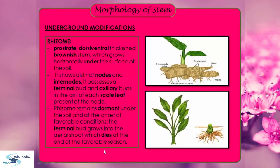There are four underground modifications. First is rhizome. Rhizome is a prostrate, dorsiventral, thickened brownish stem which grows horizontally under the surface of soil. As you can see, this is the rhizome with scaly leaves, buds, nodes and adventitious roots. It shows distinct nodes and internodes, and possesses a terminal bud and axillary bud in the axil of each scale leaf present at the node.